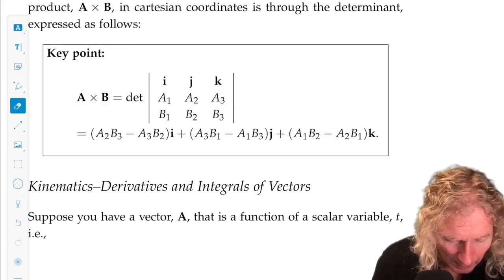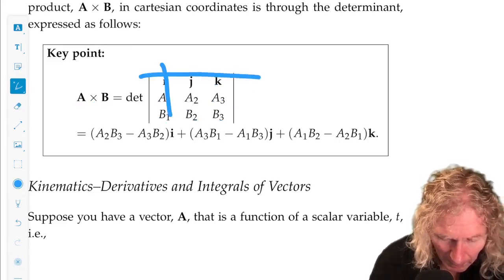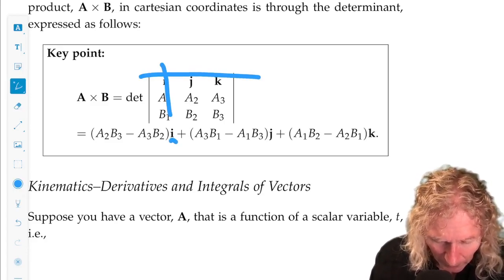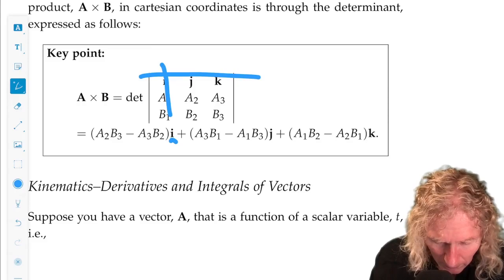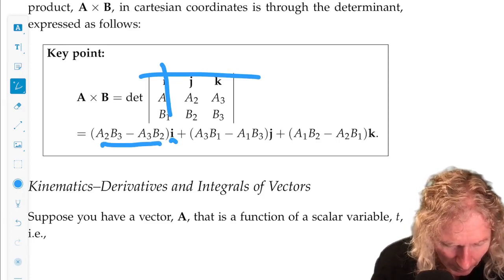So the i minor is A2B3 minus A3B2, and that's exactly the component.